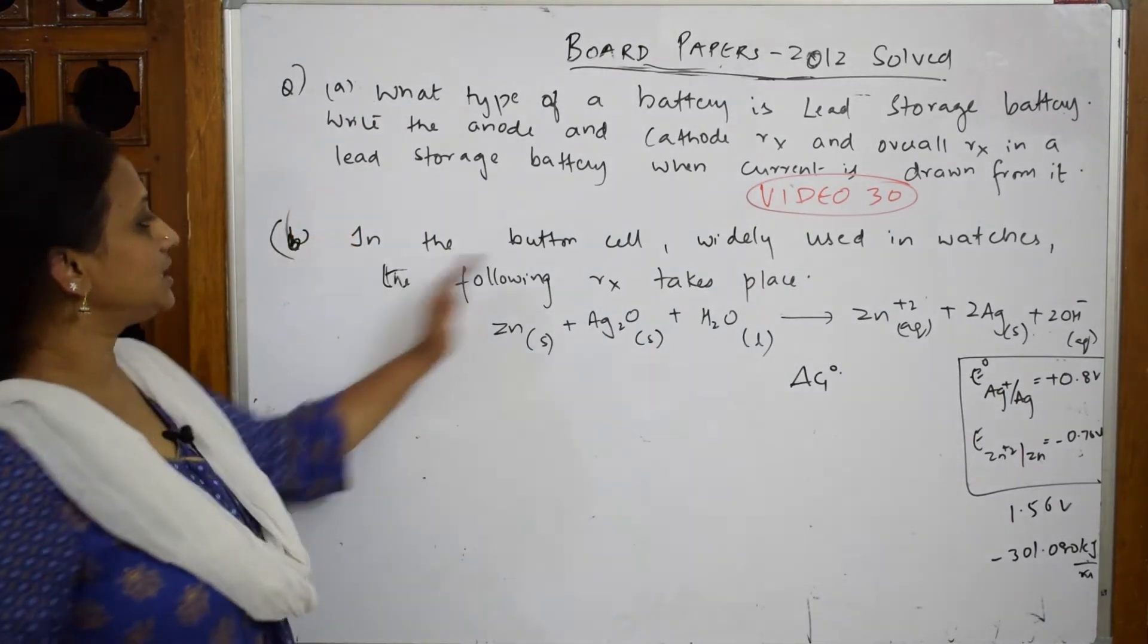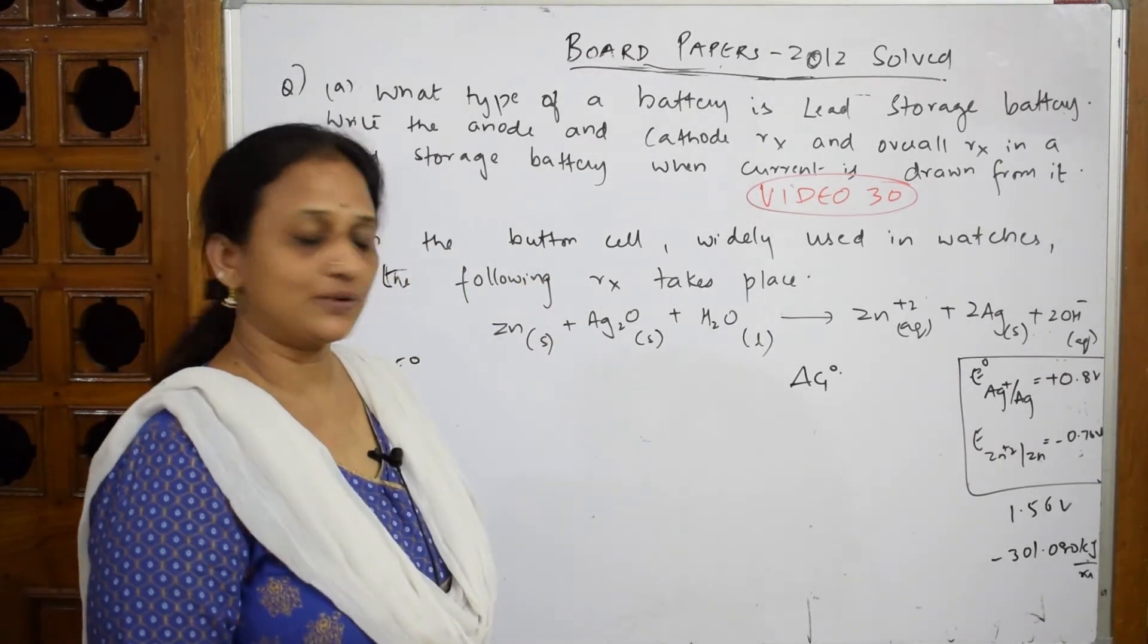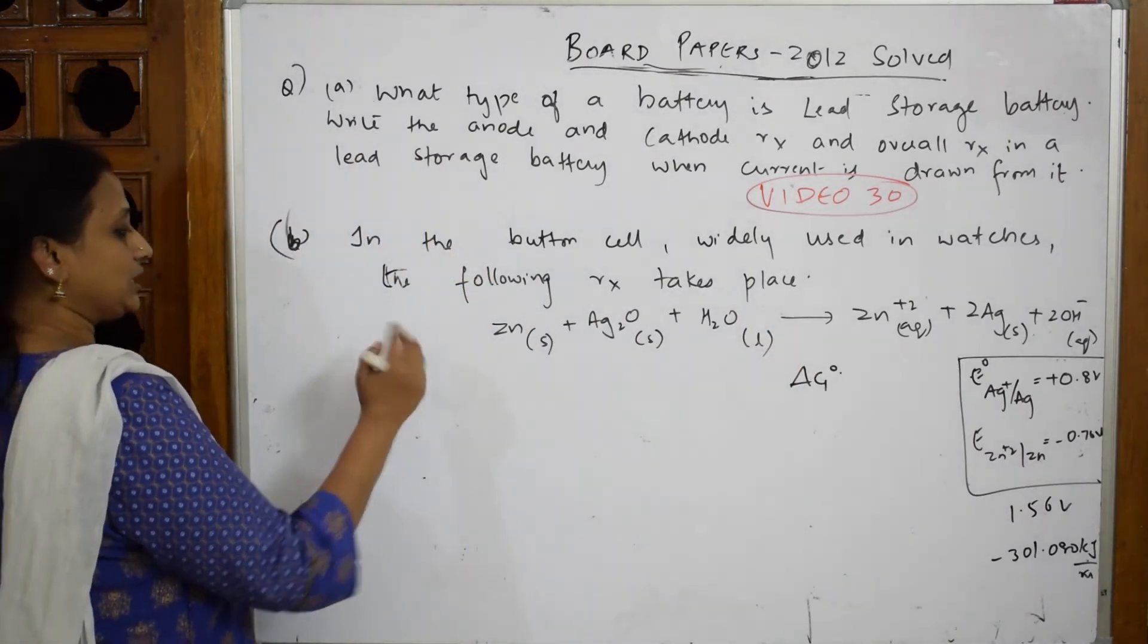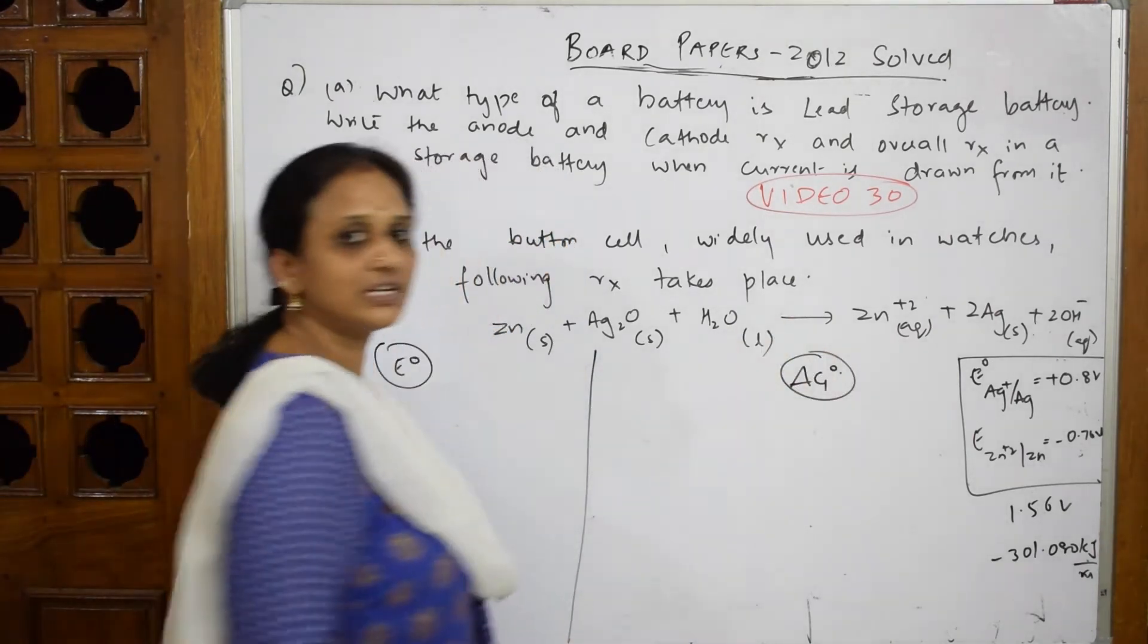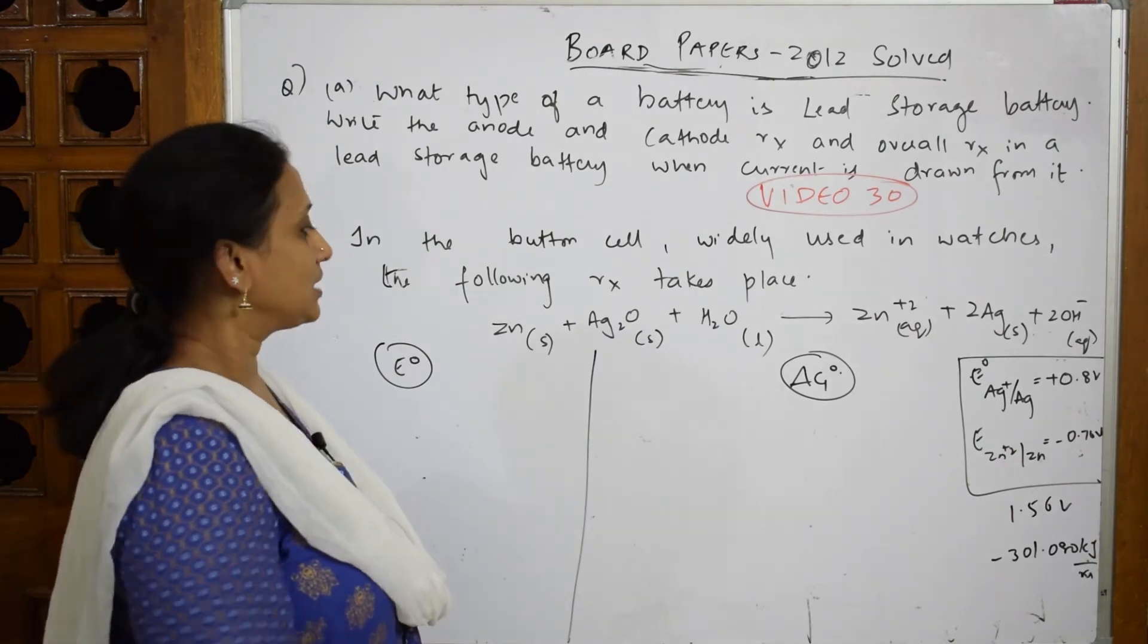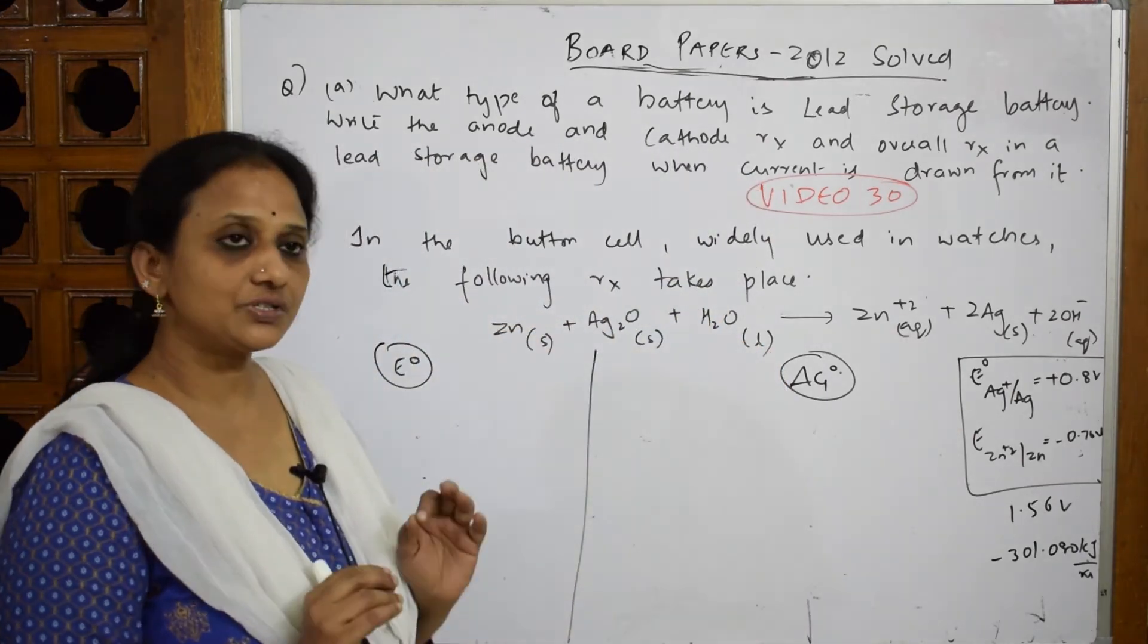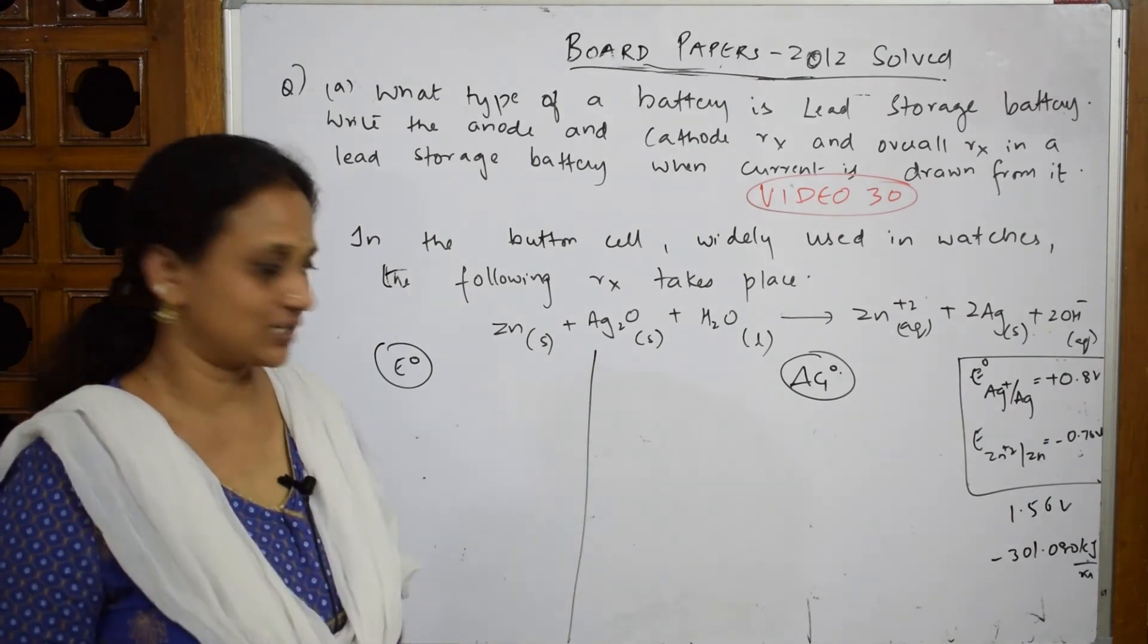Now let's come to the next question. They've given us a button cell, which we studied under primary batteries, widely used in watches. The following reaction takes place. What should I find out? I have to find out E° naught and ΔG° naught, that is Gibbs free energy at standard equilibrium conditions. They've given the electrode potential values also. As soon as such a question is given, your concentration should go to which is the oxidation reaction and which is the reduction reaction.